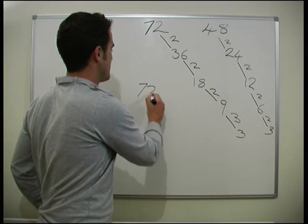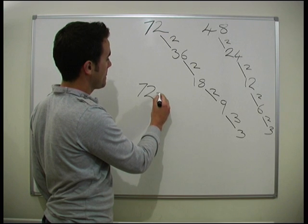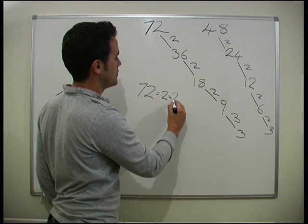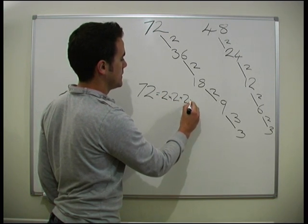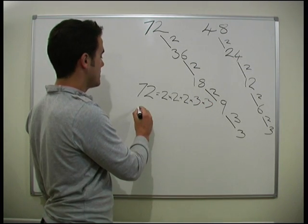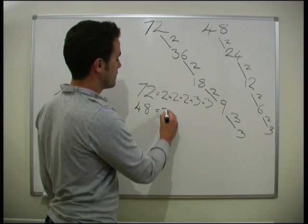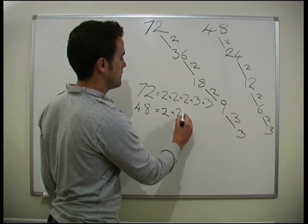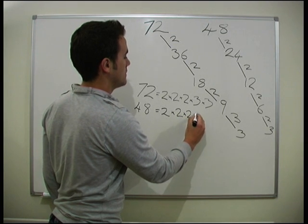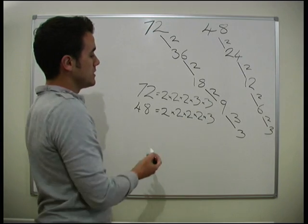So, 72, as a formation of its prime factors, will be two times two times two times three times three. And 48 will be two times two times two times two times three. Okay, so we can see they're fairly similar.